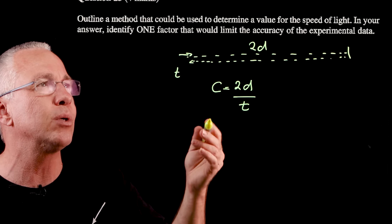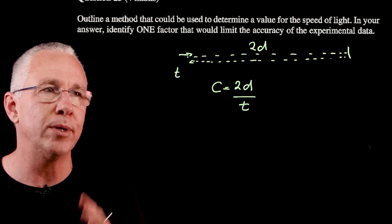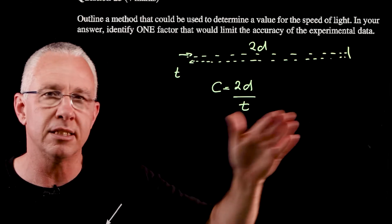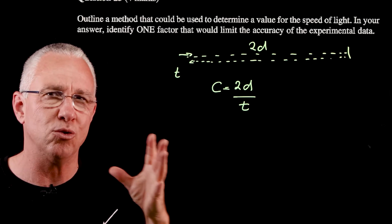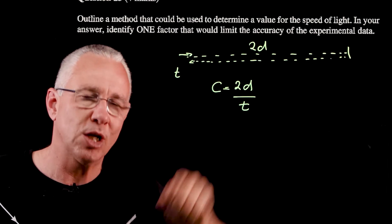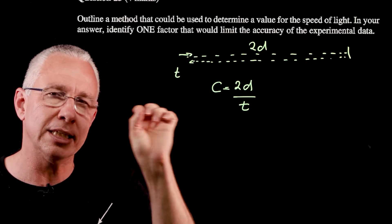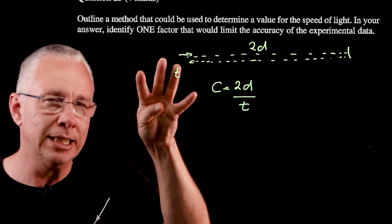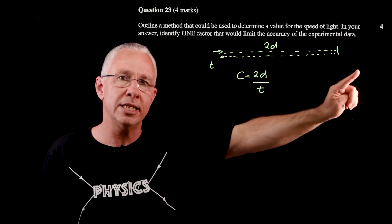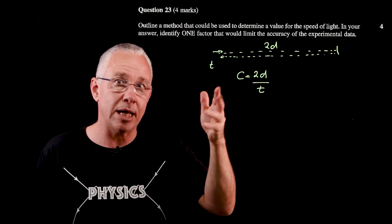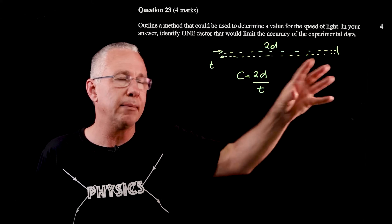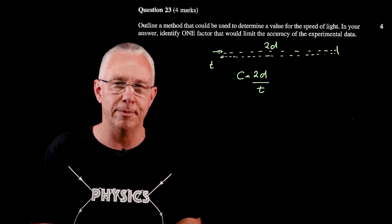The limiting factors for this method are the need for extremely large, precisely measured distances, and the challenge of measuring extremely short time intervals. Foucault and Fizeau measured in miles or kilometres. Michelson in 1929 used a tube eight kilometres long and achieved a value within 0.1% of the speed of light — but timing methods and distance measurements remain key limiting factors.